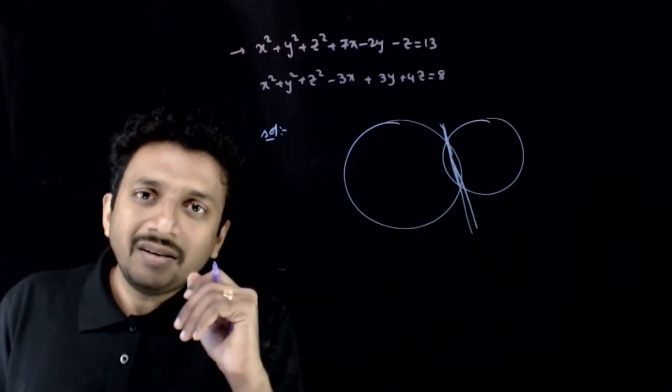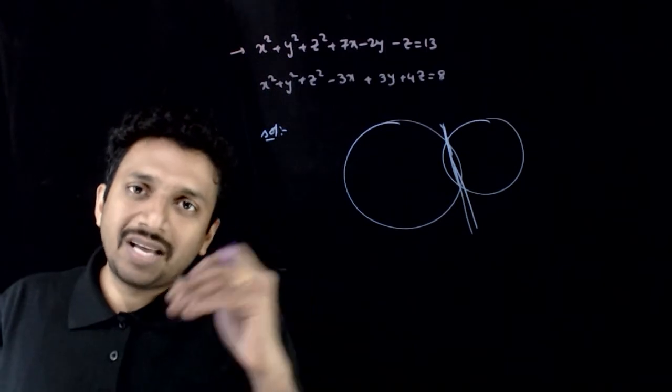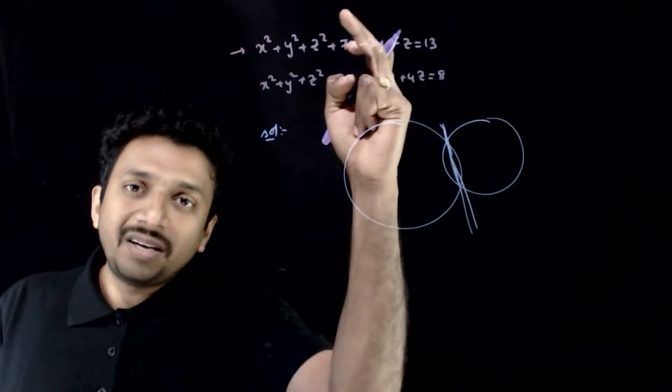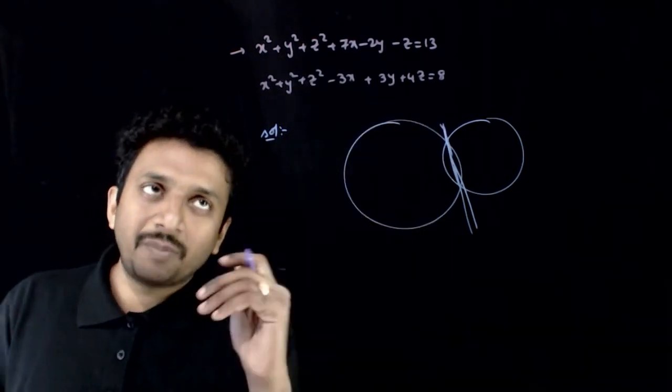The formula for the common plane is S minus S' equals 0. That is, the difference between these two planes equals 0, which is the equation of the common plane.